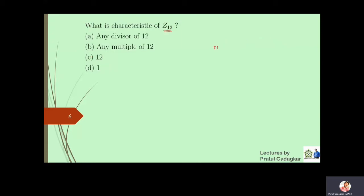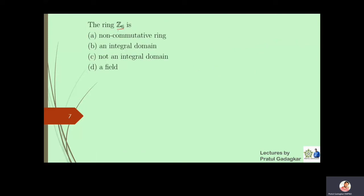The next question is: what is the characteristic of Z12? Can you find a natural number n such that n times ā equals zero bar, where ā is an element of Z12? If you choose n equal to 12, then 12 times ā will always give you zero bar in Z12. The number 12 is the smallest such positive number — any divisor won't work, and any multiple will be larger than 12. So the characteristic of Z12 is equal to 12.